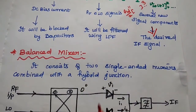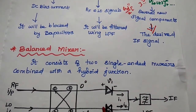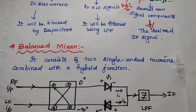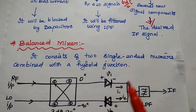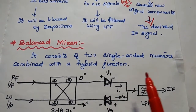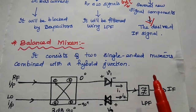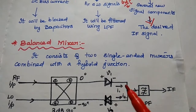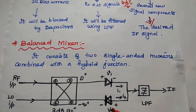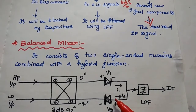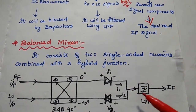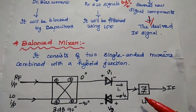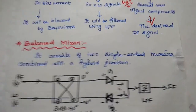The balanced mixer uses two single-ended mixers — that means two diodes — with a hybrid junction to provide the balance.